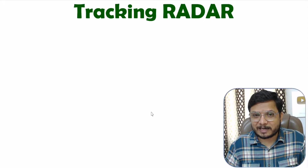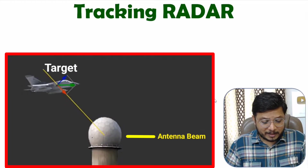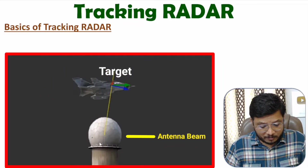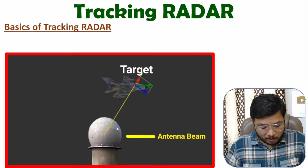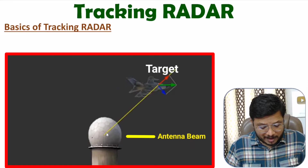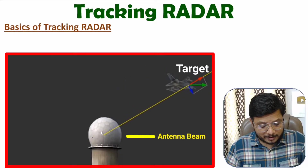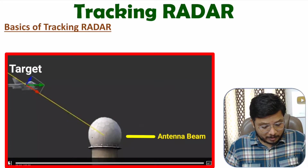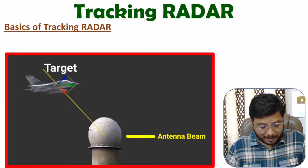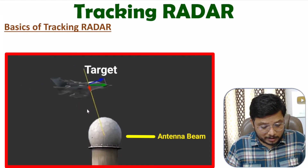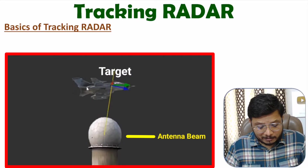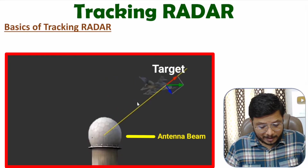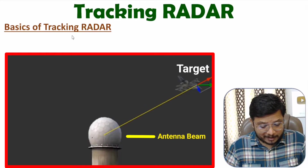Let us begin with the first agenda: basics of the tracking radar system. By animation, let me show you how exactly a tracking radar system functions. Here we have a tracking radar system — this is the radome of the radar, inside which there is a radar system. This radome is used to protect the radar system. By yellow color, you can observe the antenna beam getting focused towards the target.